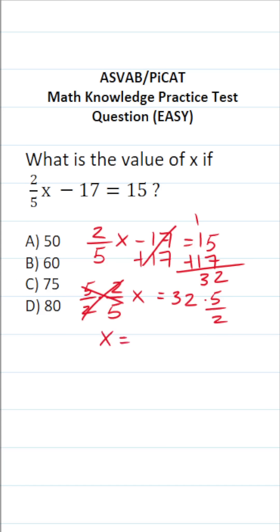Now we have 32 times 5 over 2. At first glance, this can seem somewhat challenging, but I could write 32 as a fraction by placing it over 1, and this enables me to cross-reduce. I can say 2 goes into 2 one time, 2 goes into 32 16 times, so this becomes 16 over 1, which is 16.